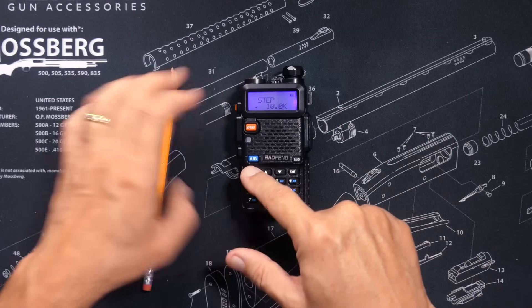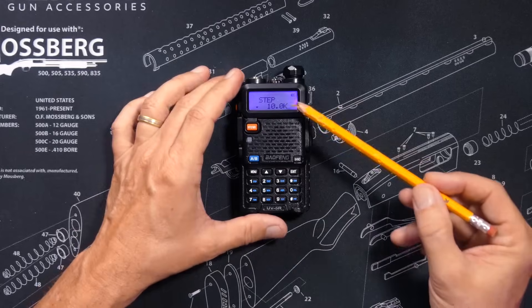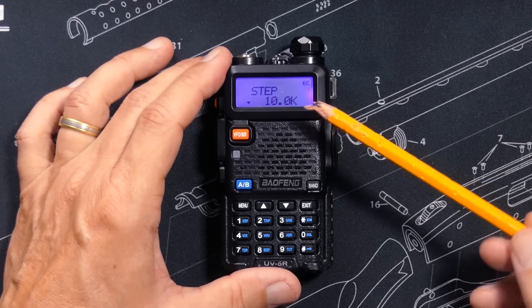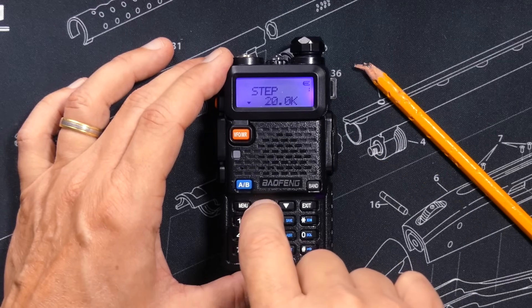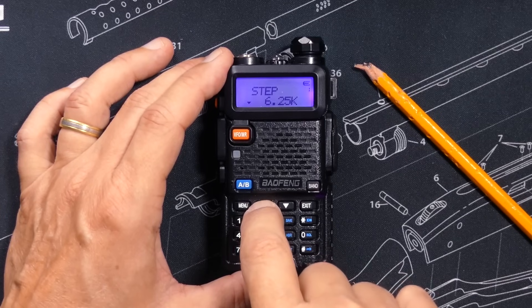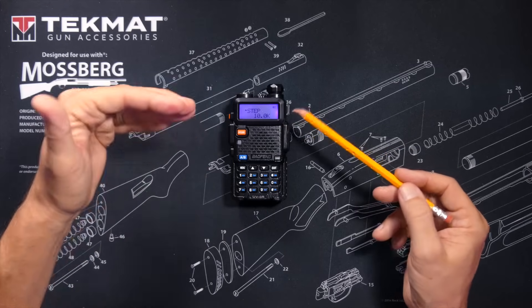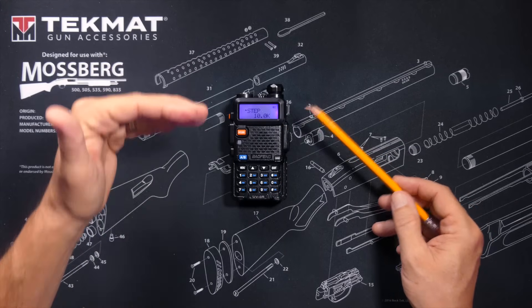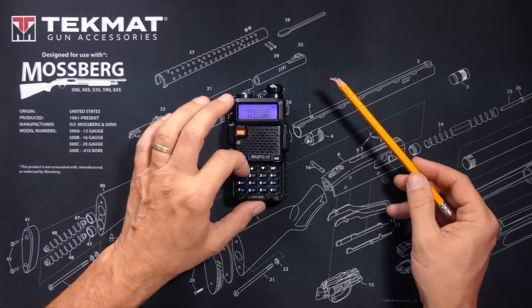As you can see, I have my step setting set to 10 kilohertz increments, but you can set yours lower or higher. This means that as it scans through frequencies, when it goes to listen to the next frequency, it will go up by that many kilohertz.